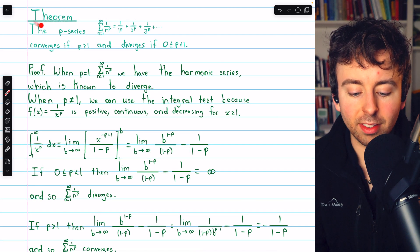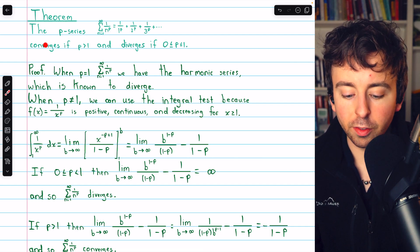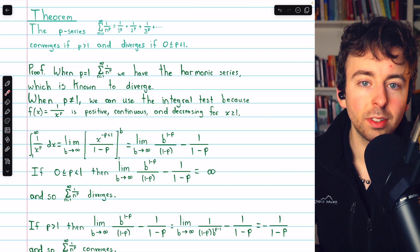And so we've established this theorem concerning p-series and their behavior. They will converge if p is greater than 1, and diverge if p is between 0 and 1 inclusive.